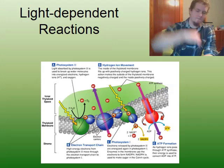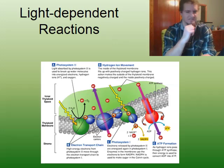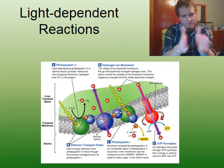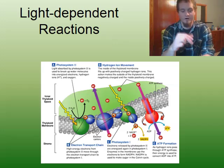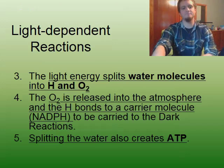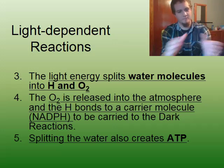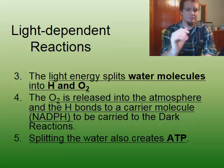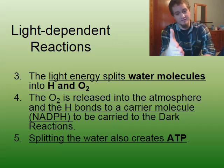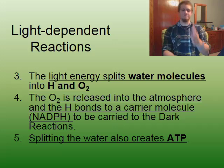If you look at the diagram, you can see how this works: light enters the thylakoid membrane, excites the electrons, and starts going through the electron transport chain. Also, the water is actually split — this splitting of water causes energy to be released, making the electrons excited. Step three: the light energy splits water molecules into hydrogen and oxygen. The oxygen is released into the atmosphere, and the hydrogen bonds to a carrier molecule called NADPH. Splitting the water also creates ATP.